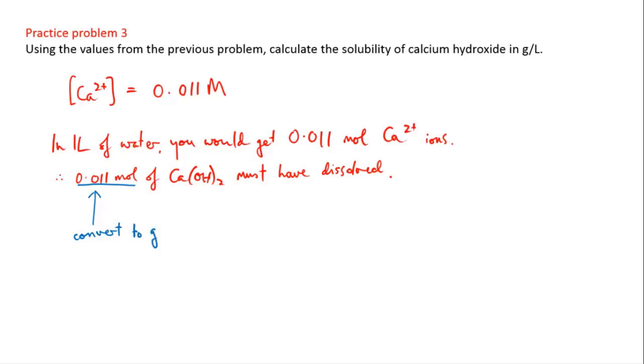So we just need to use the relationship that mass equals moles times molar mass. We know our moles, it's 0.011. And the molar mass of calcium hydroxide is 74.12 grams per mole. And if we calculate that, that gives us a solubility for calcium hydroxide of 0.82 grams per liter.